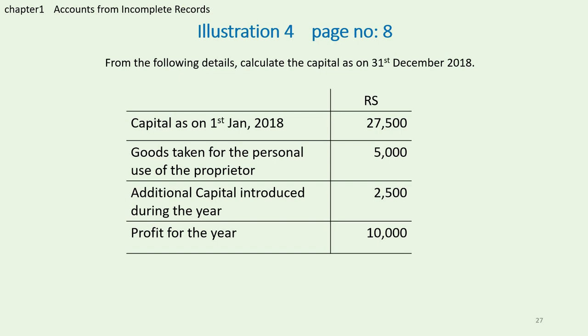Let us look at Illustration 4 which is given in page number 8 of your textbook. From the following details, calculate the capital as on 31st December 2018. Capital as on 1st January 2018 is given as 27,500. You are supposed to find out the capital as on 31st December 2018. The financial year starts from 1st January and ends at 31st December. So opening capital is given to you and we are supposed to find out the closing capital.